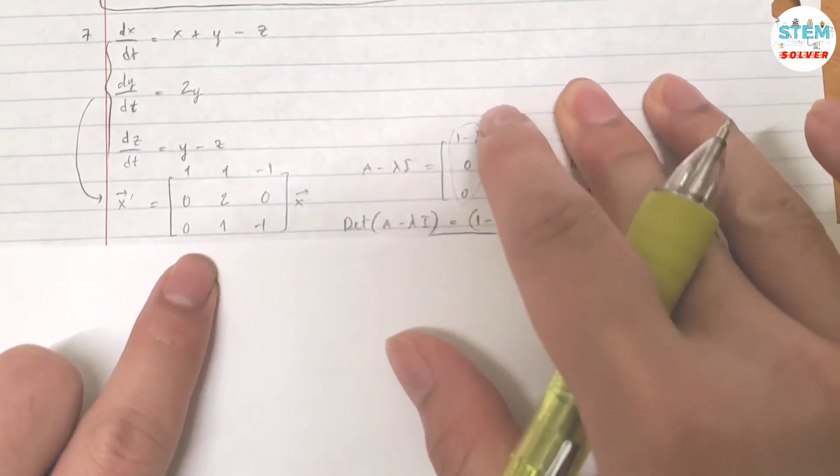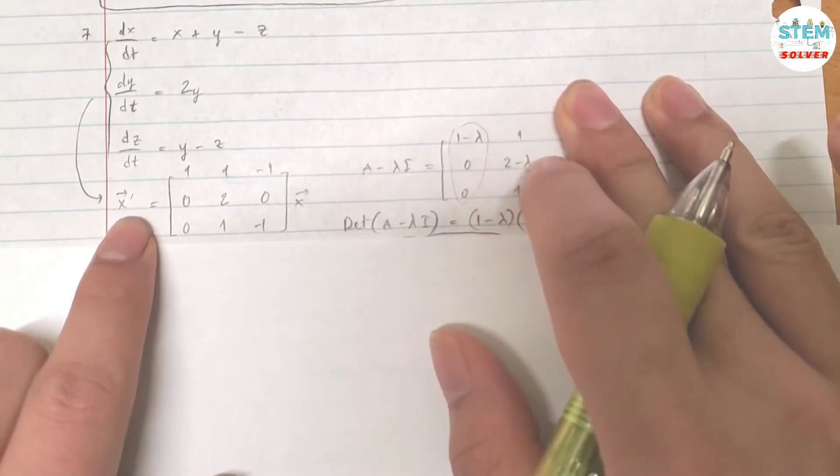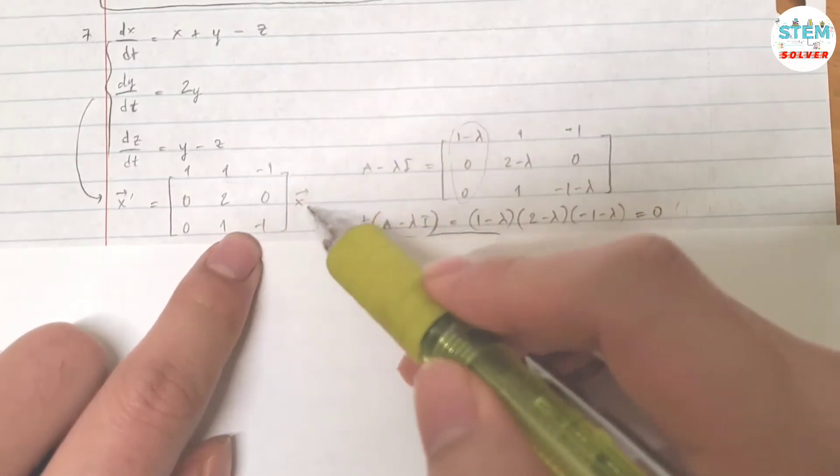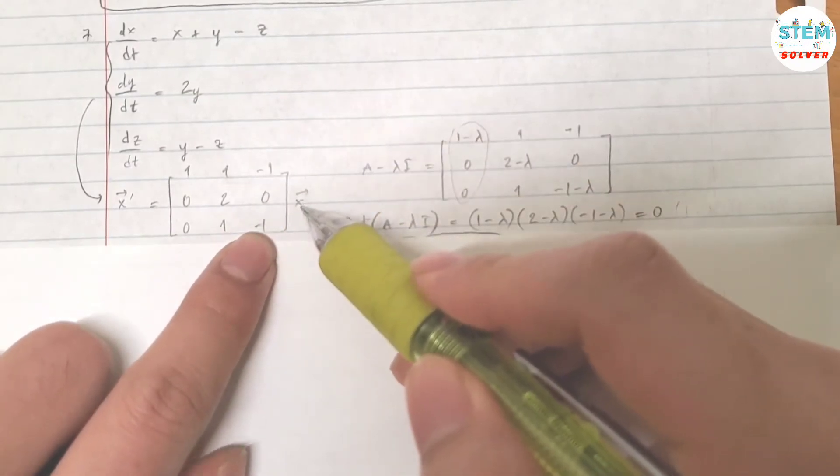First of all, you need to rewrite it in the standard form of vector x prime. Basically, you take the leading coefficients of x, y, z and put them into a matrix, then multiply it with vector x.